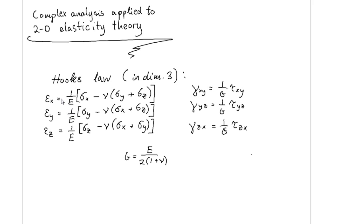Here we describe Hooke's law in terms of strains. The strain in the x-direction involves the stress in x, y, and z-directions. In addition to these three equations, we have three equations connected to the shear strain. The shear strain in the x-y direction is one over G, the shear modulus, which is described by Young's modulus and the Poisson ratio. We have similar conditions in the y-z and z-x directions.